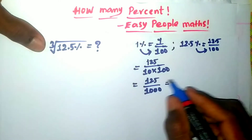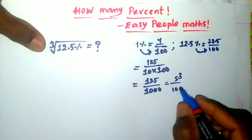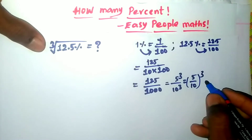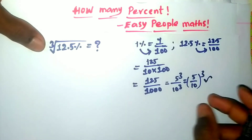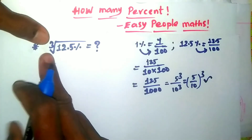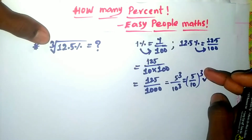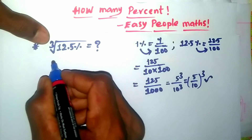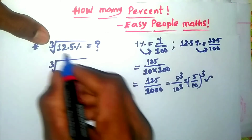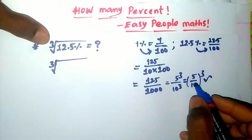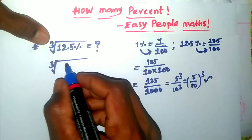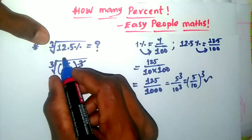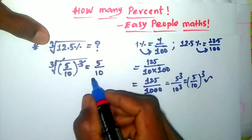125 is 5 cubed, and 1000 is 10 cubed, so this gives us 5 divided by 10, whole to the power of 3. Cube root here — the cube gets cancelled, so the remaining number is 5 divided by 10.